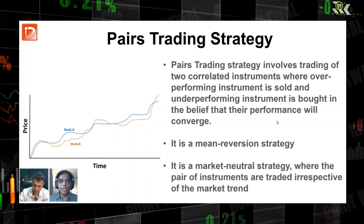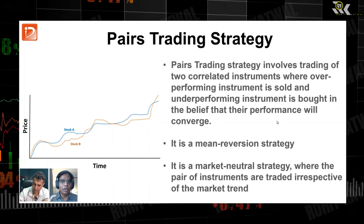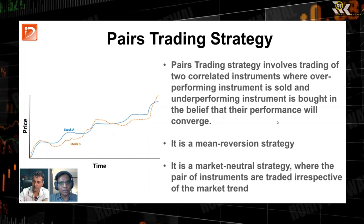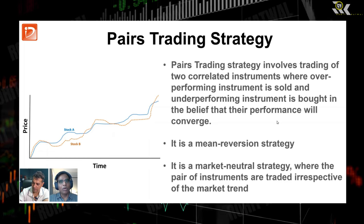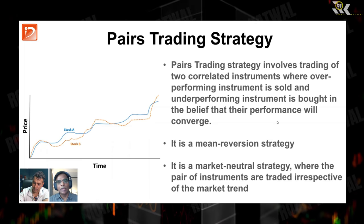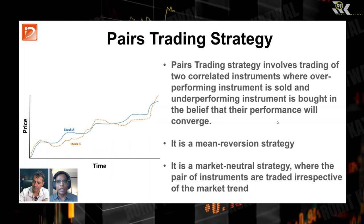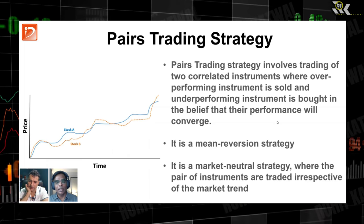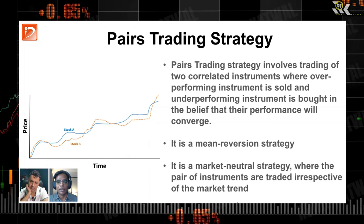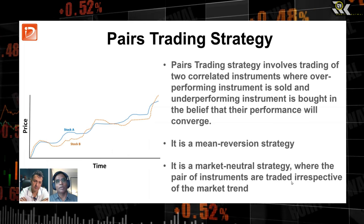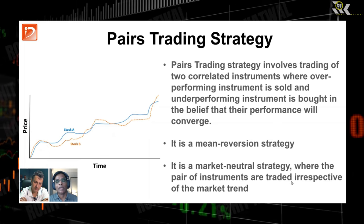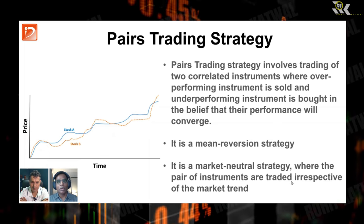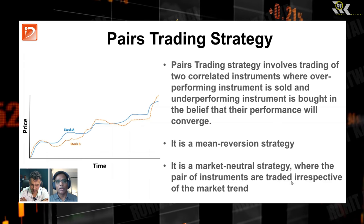If there is some divergence, you bet that you'll short the over-performing instrument and buy the under-performing instrument, knowing they'll converge again. This is a mean reversion strategy. It is also a market neutral strategy where the pair of instruments are traded irrespective of market trend — it doesn't matter if you're in a bullish, bearish, or sideways market, as long as those pairs are correlated.